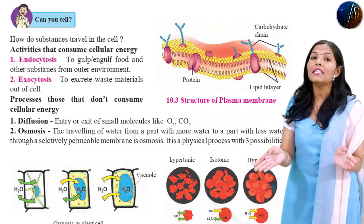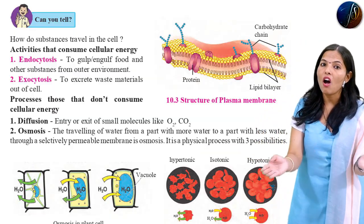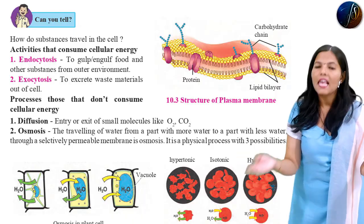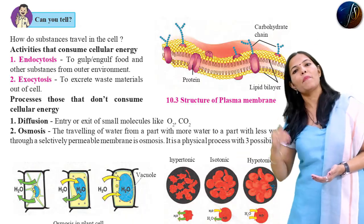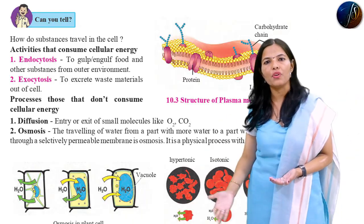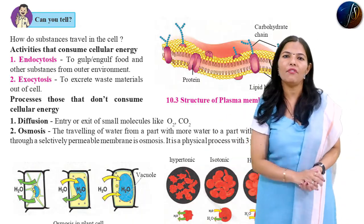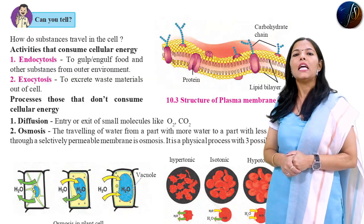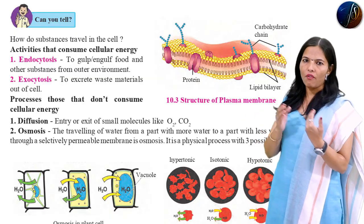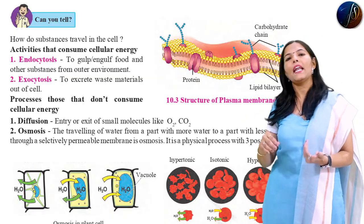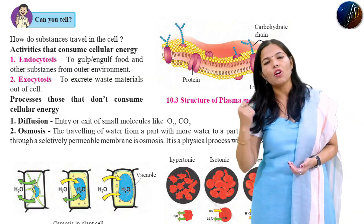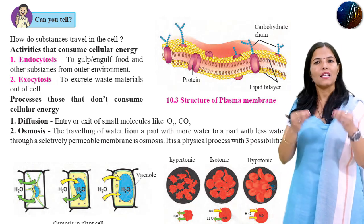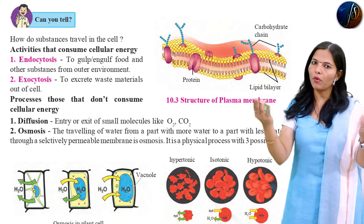Diffusion is the transmission of gases in the cell — like oxygen in and carbon dioxide out — is called diffusion. That is, entry of oxygen and exit of carbon dioxide in the cell; this procedure is called diffusion.